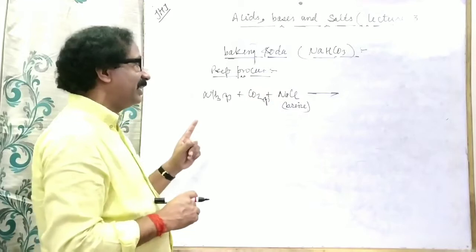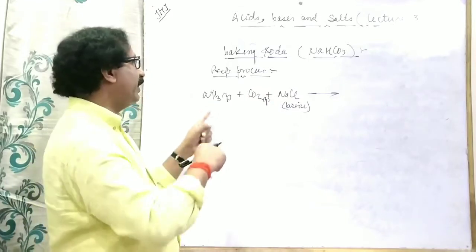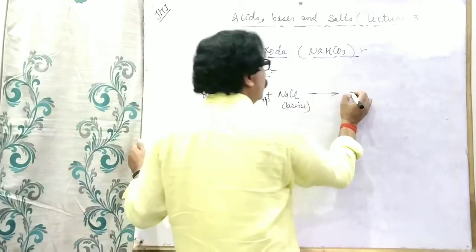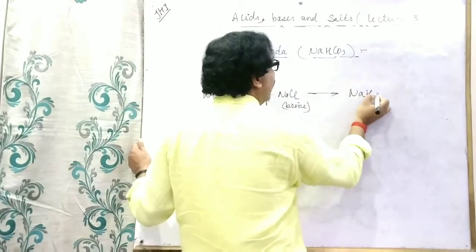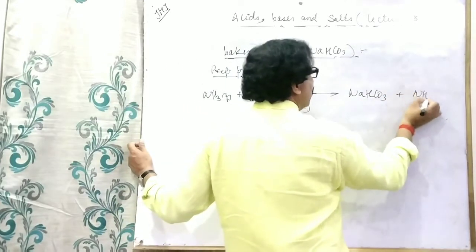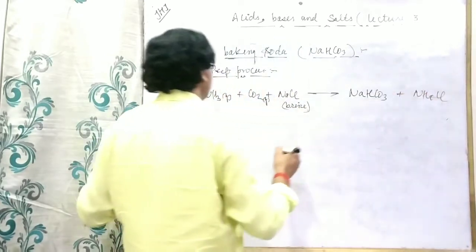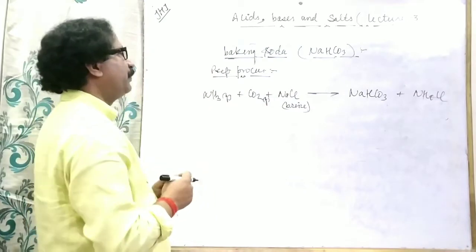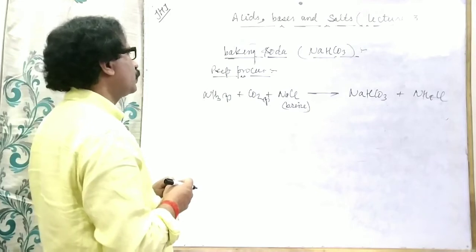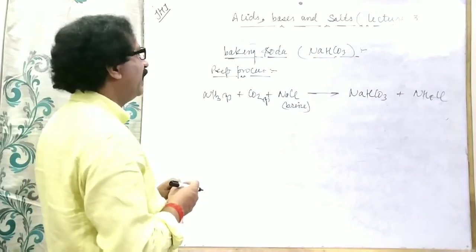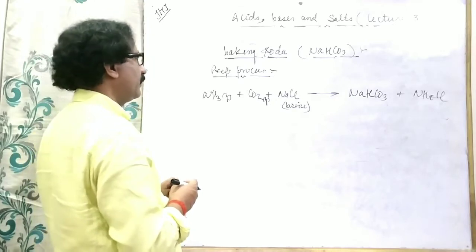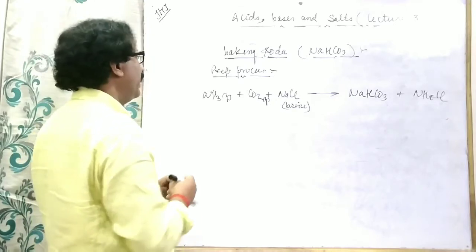We allow ammonia and carbon dioxide to mix into the brine, then the product is NaHCO₃ and the by-product NaCl is formed. NaCl is used to form as a by-product. Now we have to balance this equation.